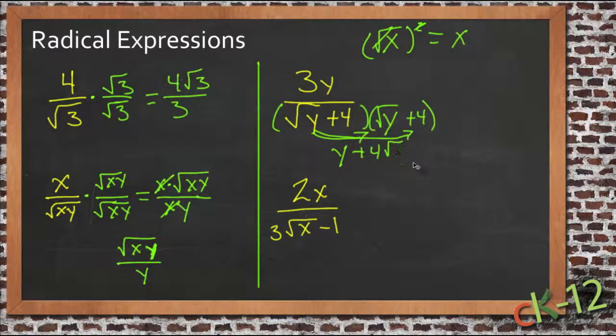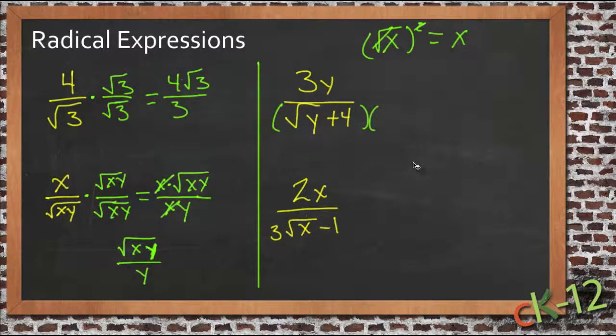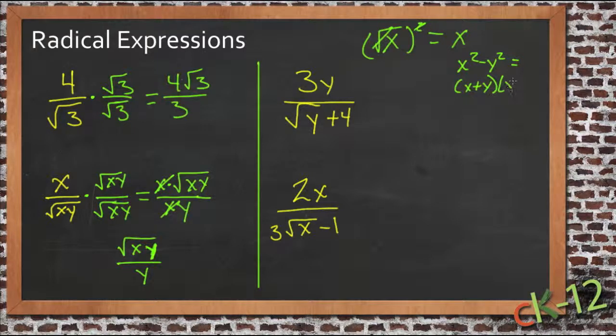So what we need to do is use the trick we ran into when we were dealing with difference of squares. When we factor difference of squares, like x squared minus y squared, this always factored as x plus y times x minus y, and when we did that, the middle term of the trinomial canceled out.